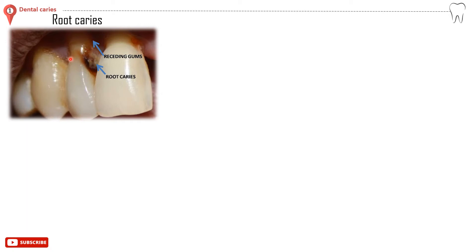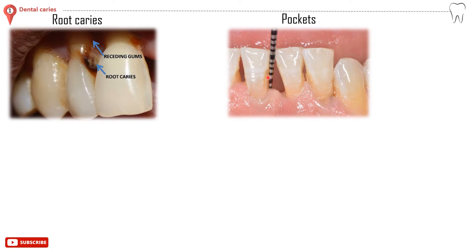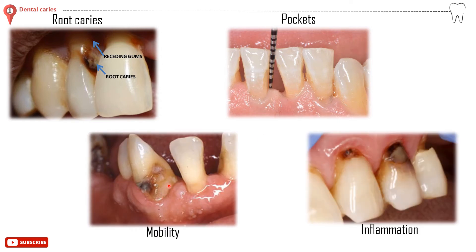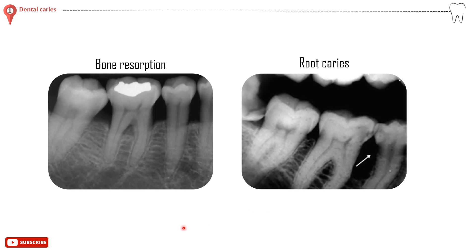Gum tissue recession and increased periodontal pocket depth typically occur due to untreated gum disease, genetic disorders, systemic disease such as diabetes, traumatic injury, poor oral hygiene, aggressive brushing, tobacco use, and aging. Treatment requires first control of the etiological factors; for most patients, this involves dietary advice and oral hygiene instruction. Teeth might feel sensitive, loose, or painful when biting, and the surrounding gingival tissue might turn red due to inflammation. Bone resorption leads to root exposure and subsequently root caries.